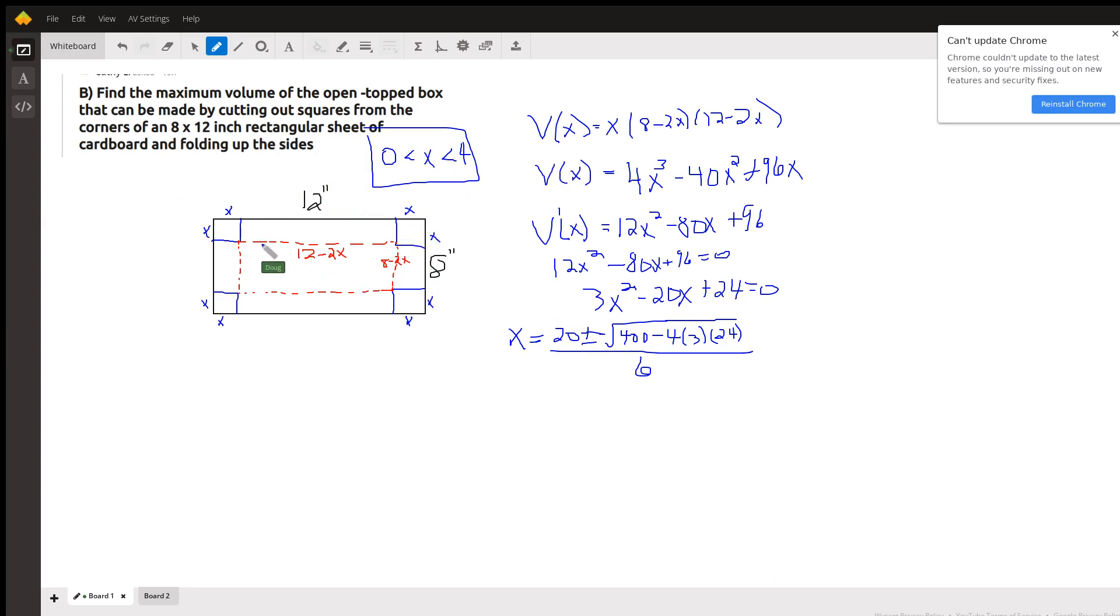After we fold up the sides along these red dotted lines, X will be the height of the box, 12 minus 2X will be the length of the base, and 8 minus 2X will be the width of the box. So the volume of the box is length times width times height.